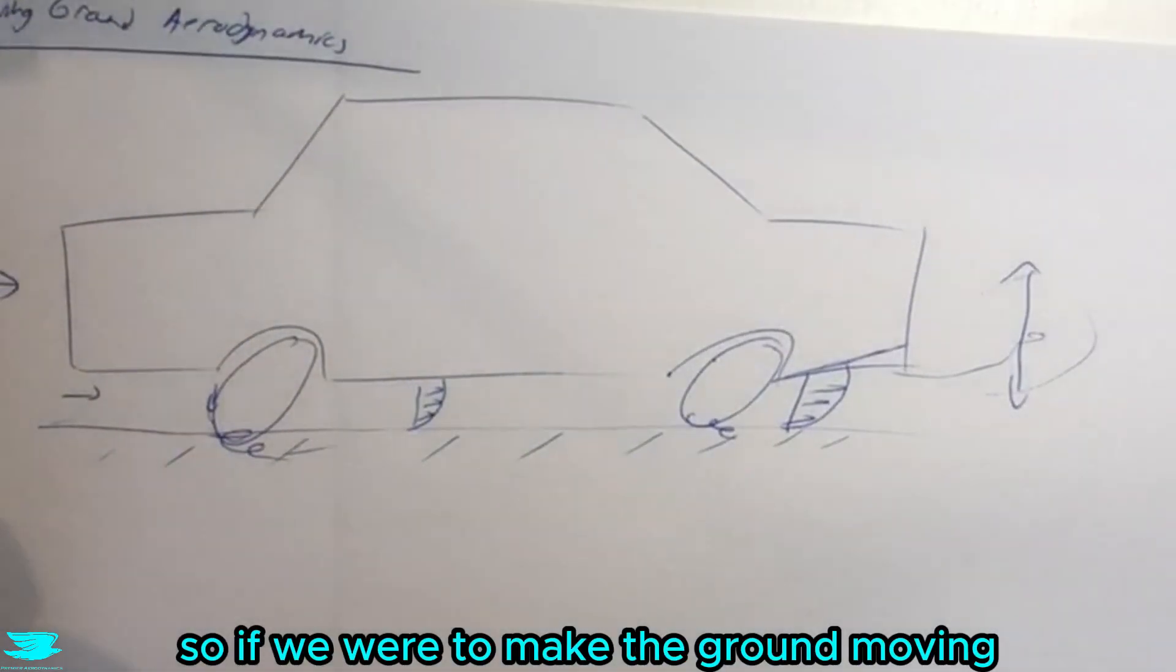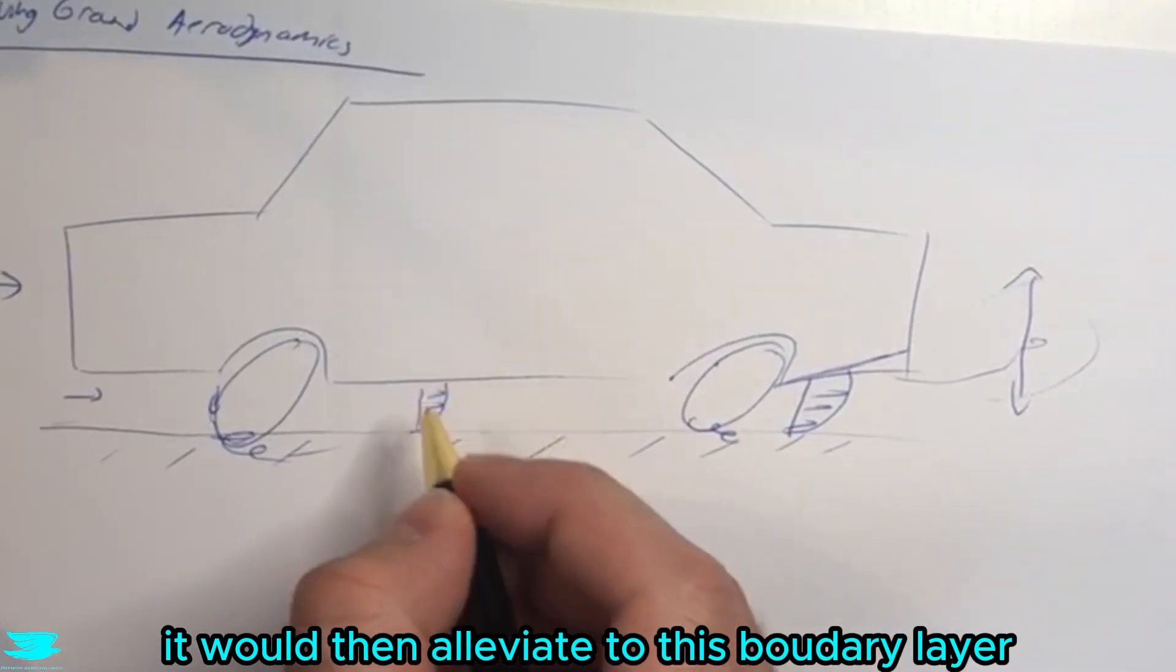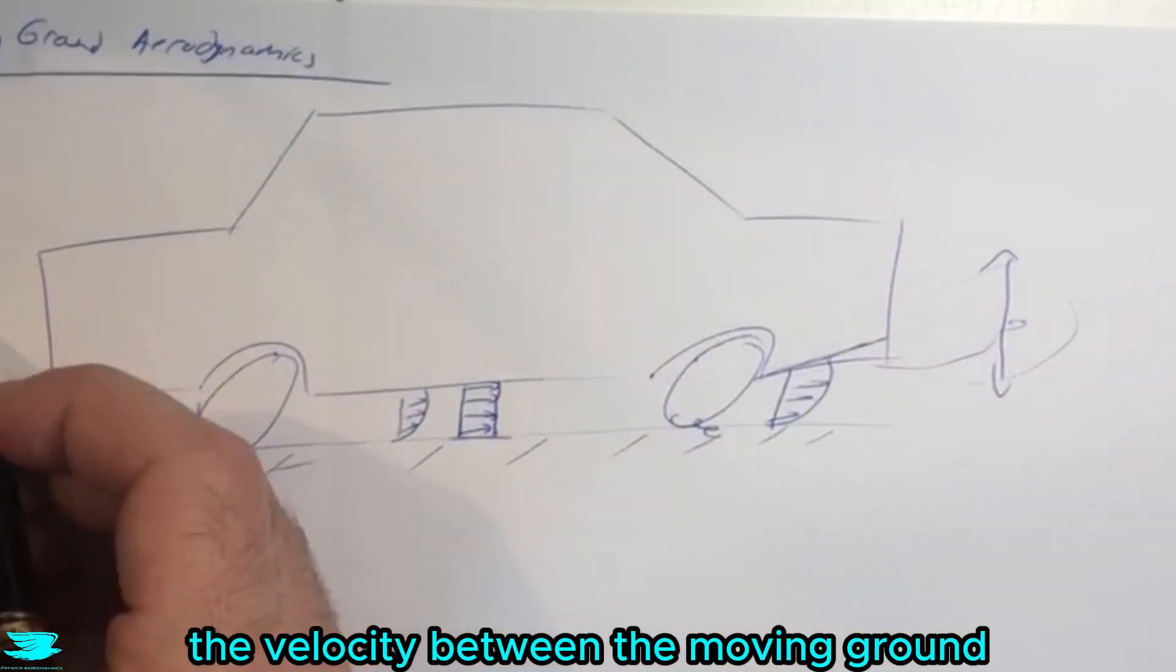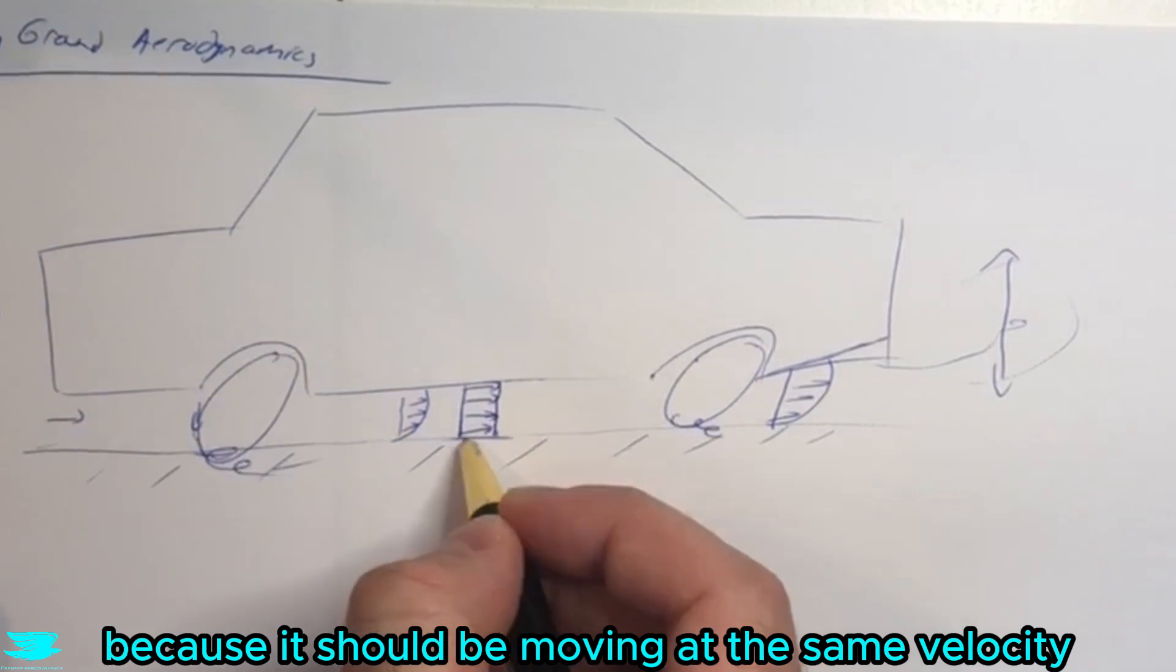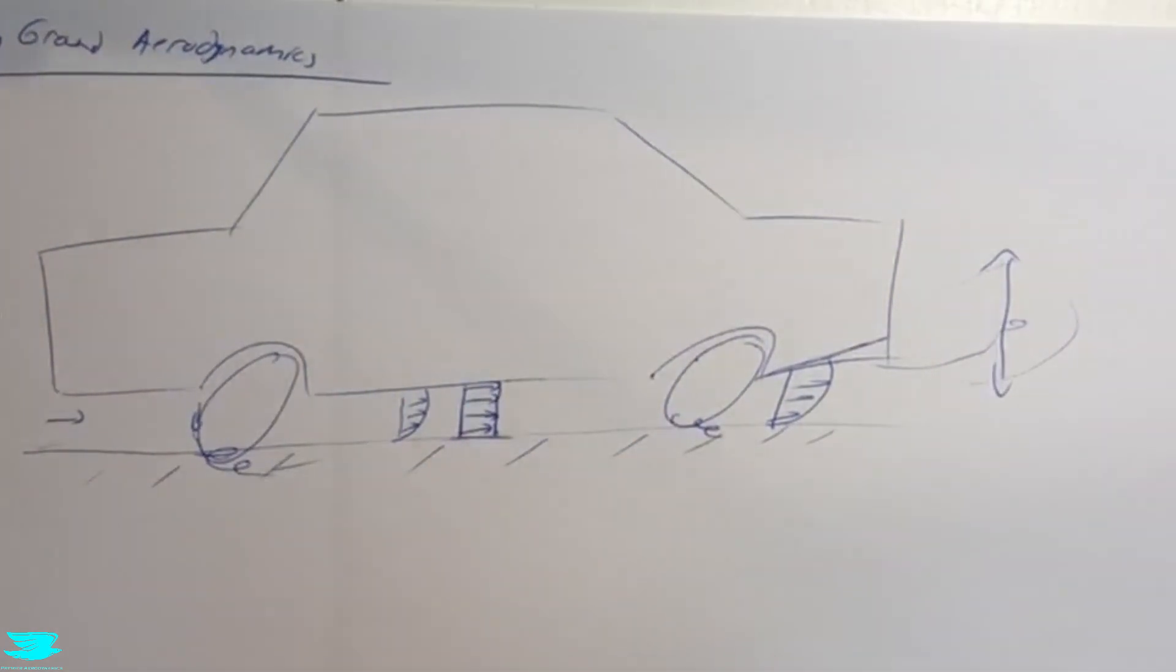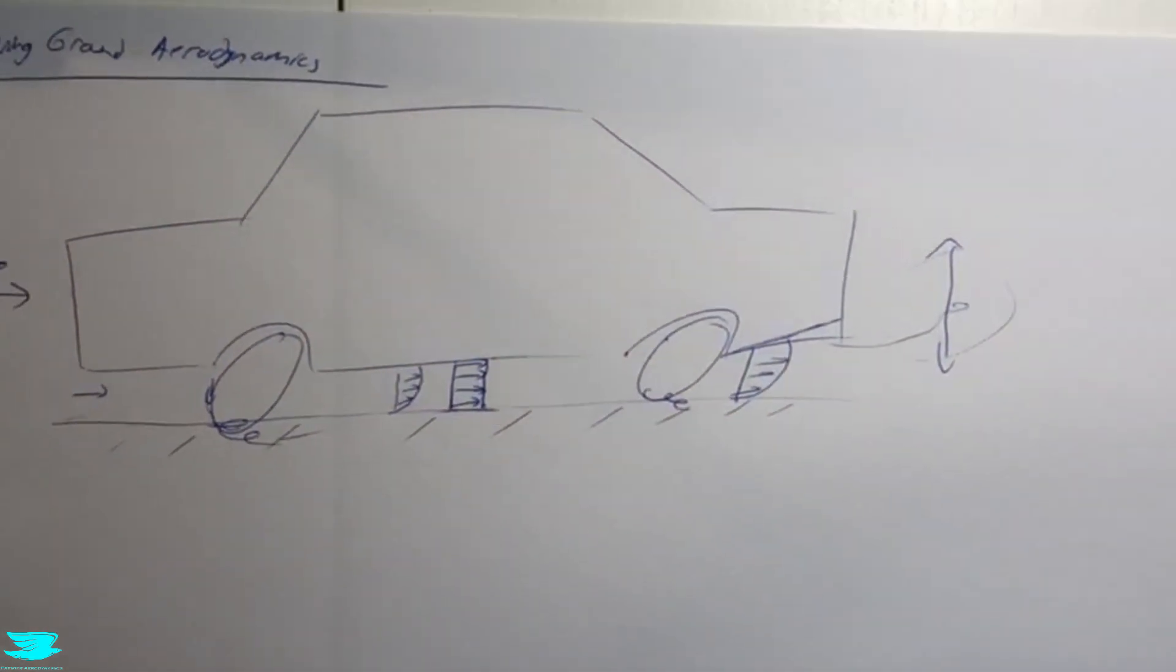That is all because the ground is not moving, and it should be moving. If we were to make the ground moving, we would then alleviate this boundary layer. The velocity between the moving ground and the free stream flow should be zero because it should be moving at the same velocity.